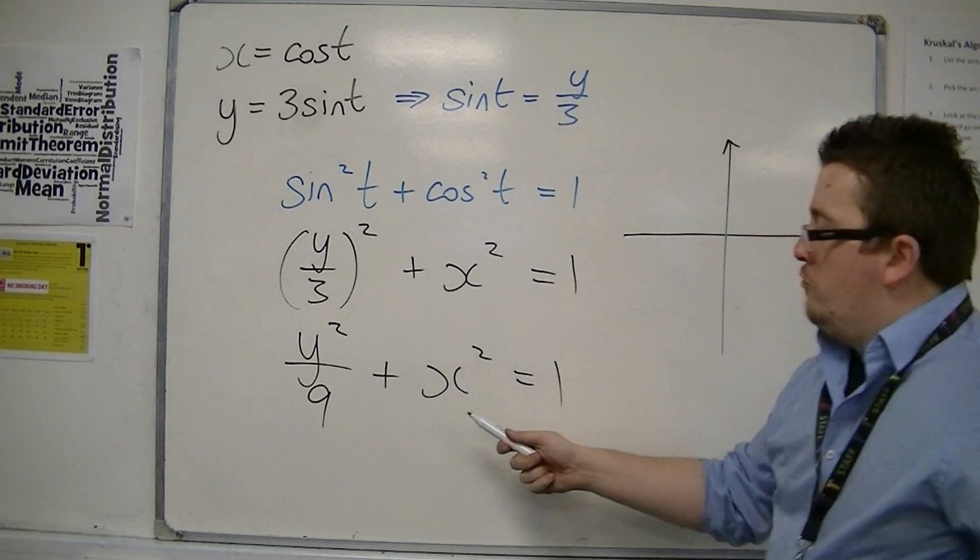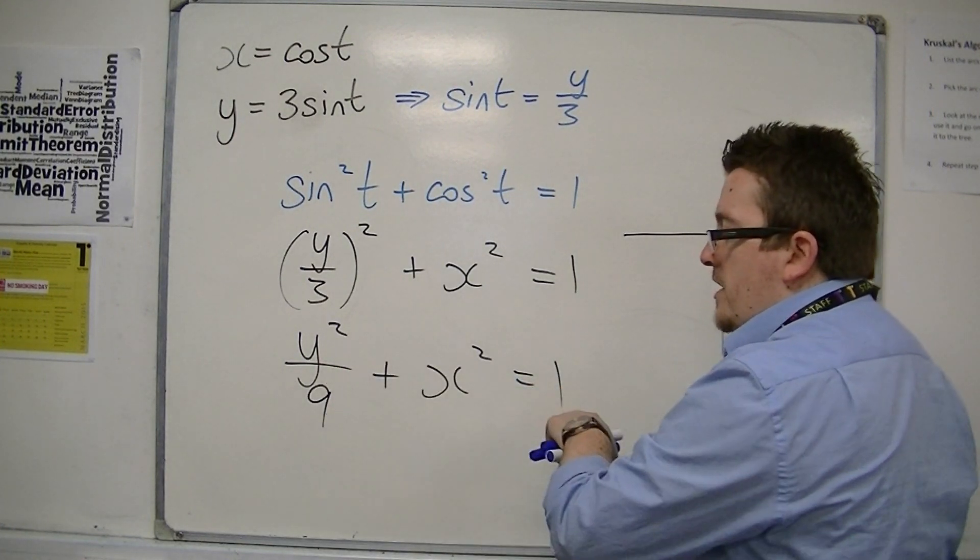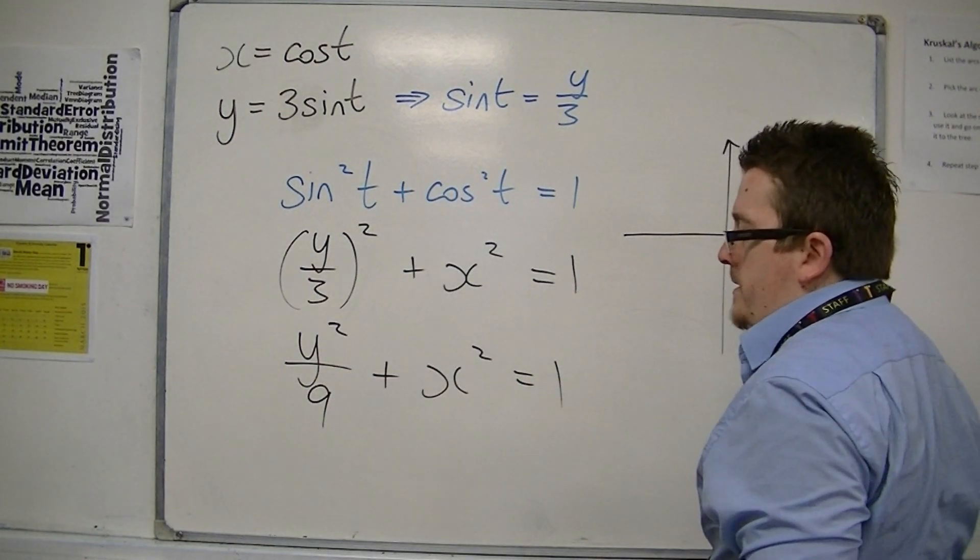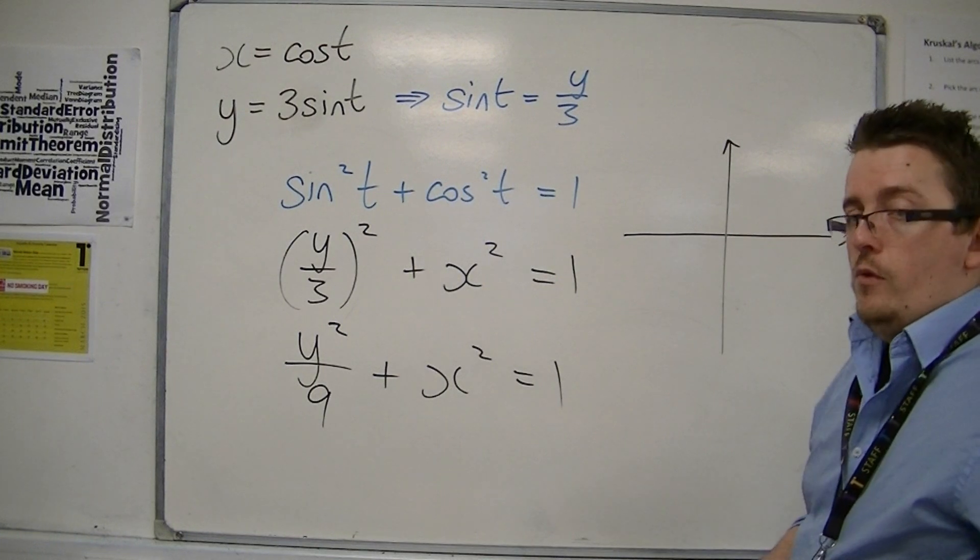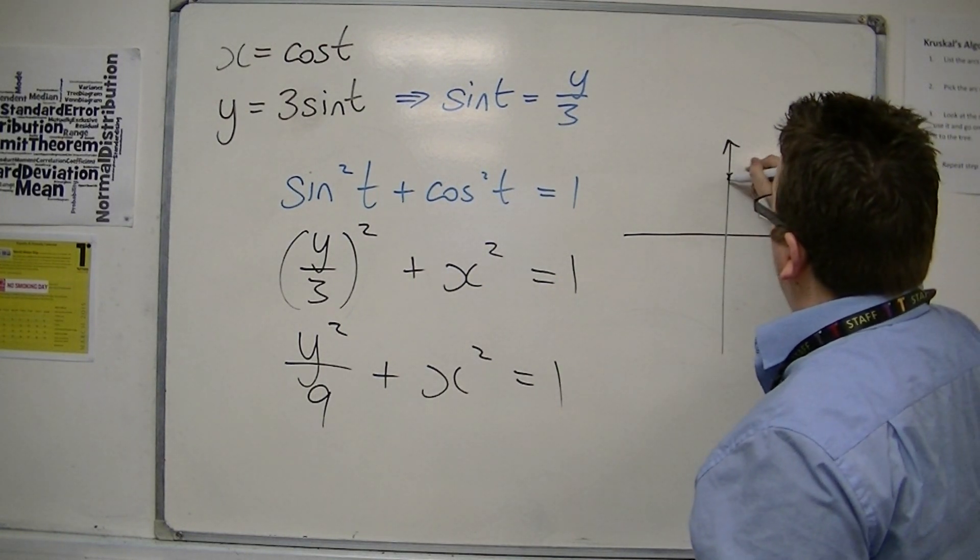When x is 0, we get y squared over 9 equals 1, so y squared has to be 9, so y is plus or minus 3.